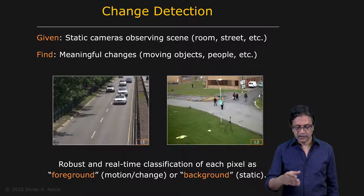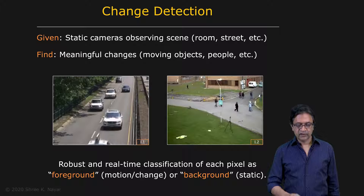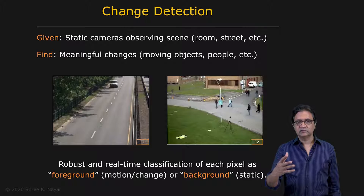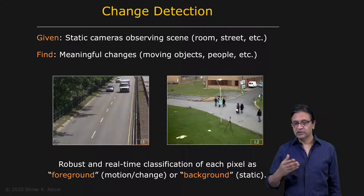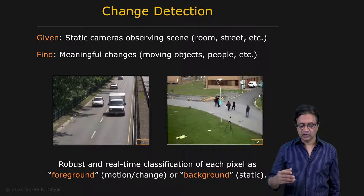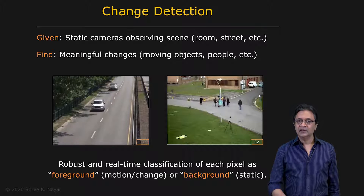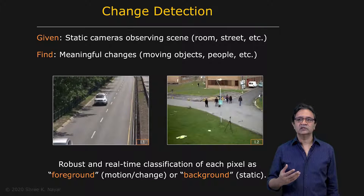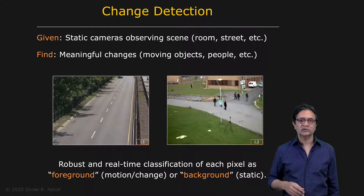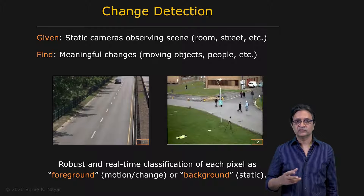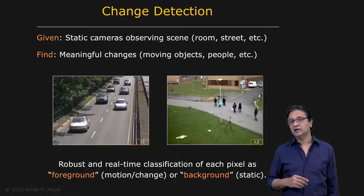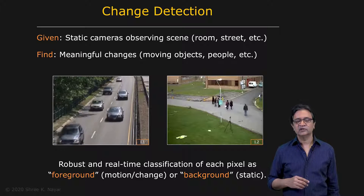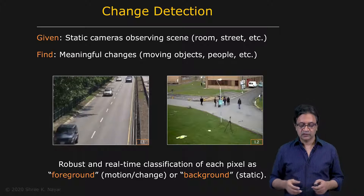At first glance, for a scene with fairly benign settings — large cars coming down a street or people with distinct clothing — we can say we should be able to come up with an algorithm to find meaningful changes, the objects of interest. But interestingly, we have many uninteresting changes that we don't want to be detecting. We want to be resilient to them.